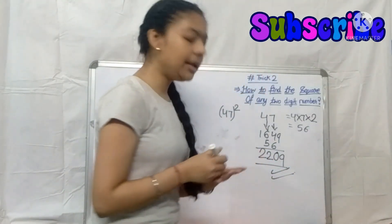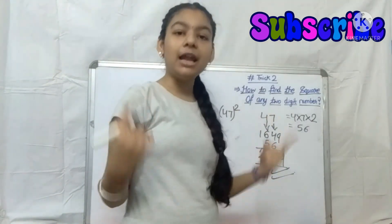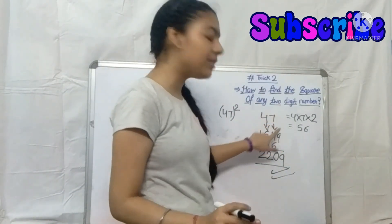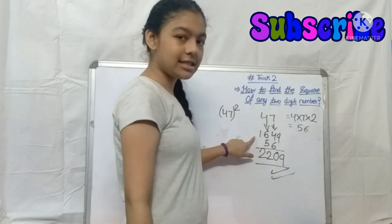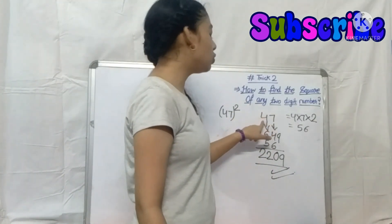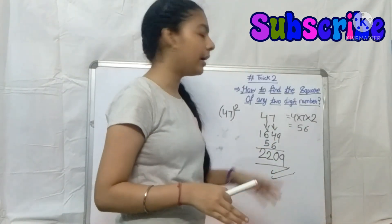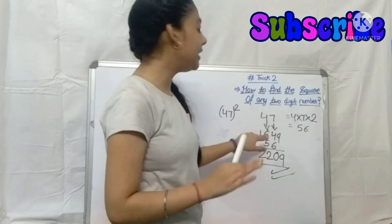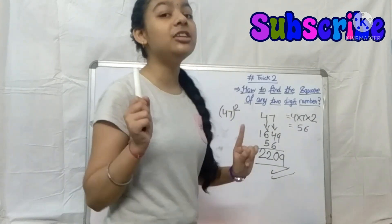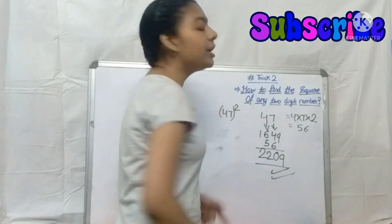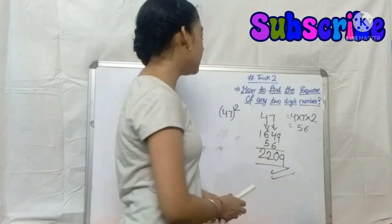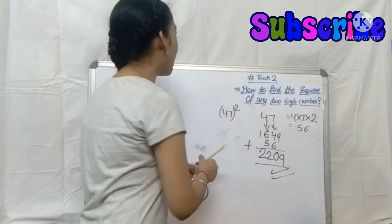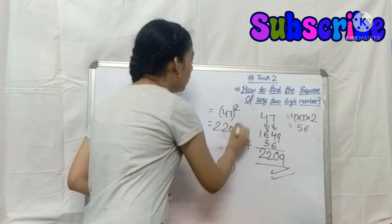So, 3 very simple steps. First, square each digit of the number: for 47, 7 squared is 49 and 4 squared is 16, written as 1649. Second, multiply both digits together and then by 2: 4 into 7 into 2 equals 56. Third, add 56 shifted one place (leaving the unit digit) to 1649. The result is 2209. So 47 squared equals 2209.